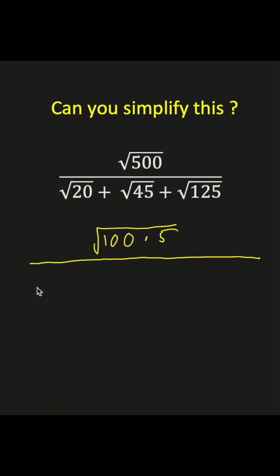Next, 20 is 4 times 5, 45 is 9 times 5, and 125 is 25 times 5.